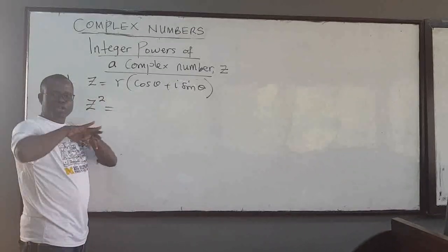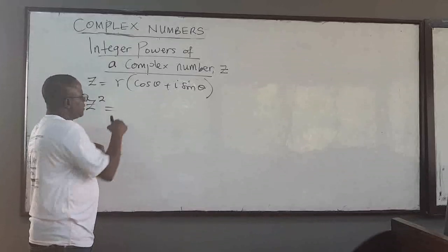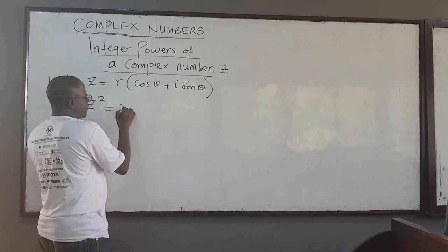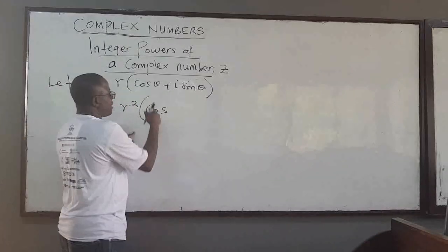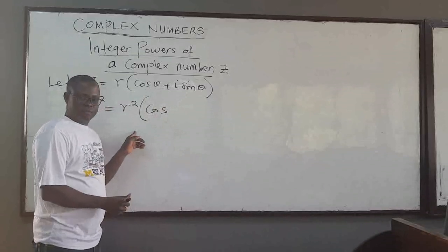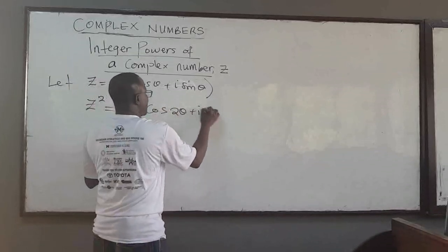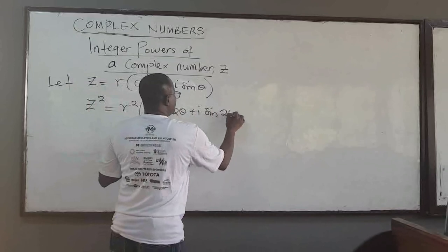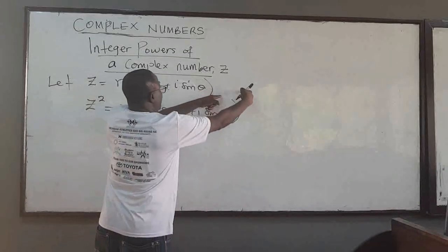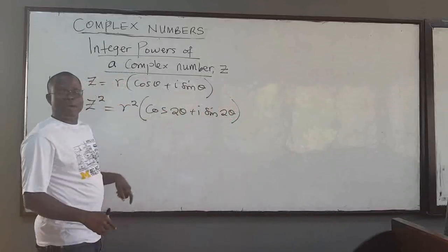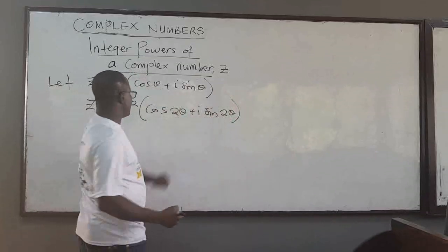We said that you can multiply complex numbers in polar form by adding the arguments. So you're going to have r times r, which is r², and cosine of θ + θ — that gives you cos 2θ + i sin 2θ — because I'm multiplying z by itself and the arguments add up: θ₁ + θ₂ gives 2θ here.